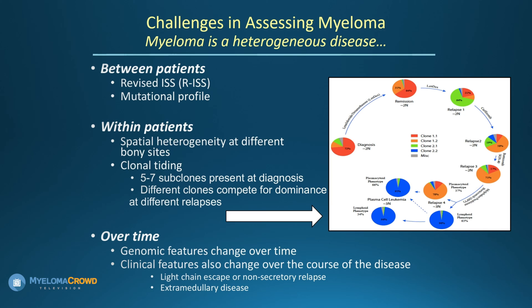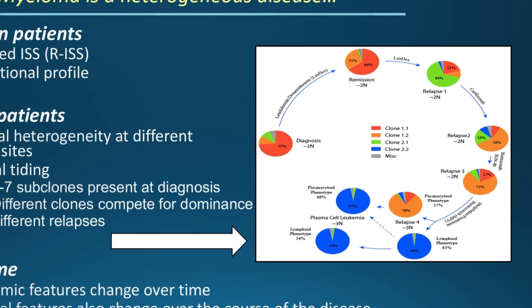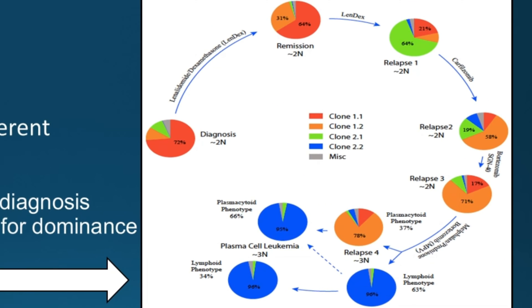Research by Jonathan Keats, now at TGen in Scottsdale, Arizona, has shown that at diagnosis an individual with myeloma has five to seven subclones. They all look the same under the microscope, but there are nuanced differences between them. In a pie diagram showing diagnosis and different relapses, the proportion of each clone is represented by how much of the pie each color occupies.